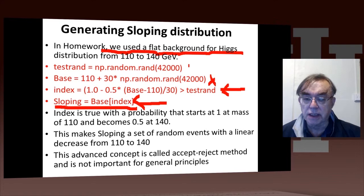So this is a linear function starting at 1 and ending up at 1 half. And that's what I really wanted my mean value of events to follow, as a function of mass.